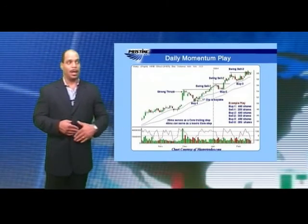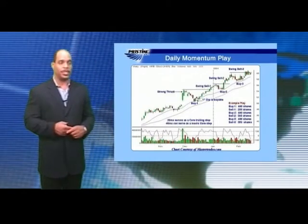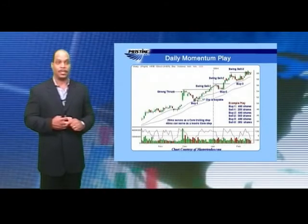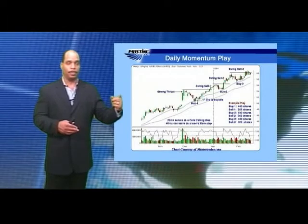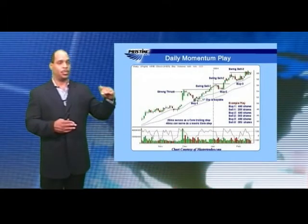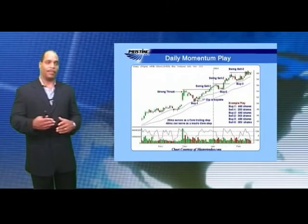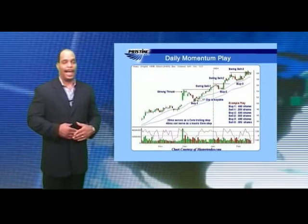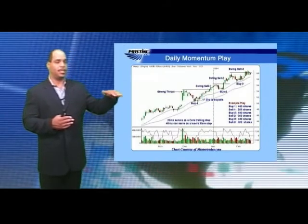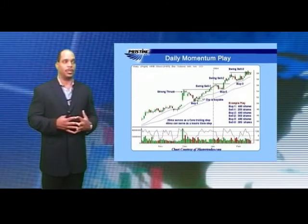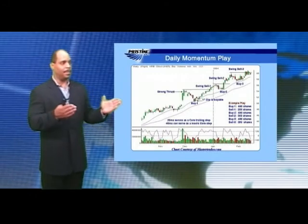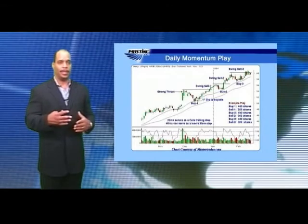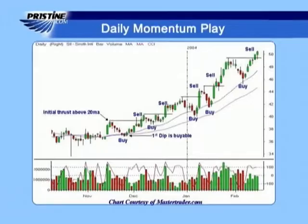At buy point number one, we bought 400 shares. At sell point number one, we sold 200 shares. At buy point number two, we bought an additional 400 shares, leaving us with 600. At sell point number two, once there's a multi-bar rally away from the 20 that supersedes the high of the last rally, we sell one half — a 300 share lot. At buy point number three, we buy an additional 400 shares and sell one half at the next rally, which is a 350 share lot, and so forth. This is a real live example of a momentum trade played over an extended period of time.